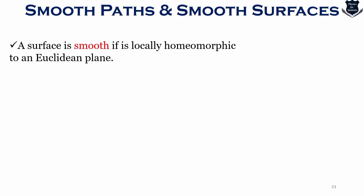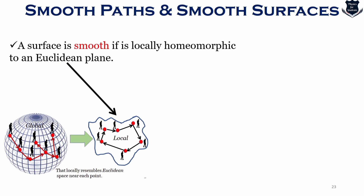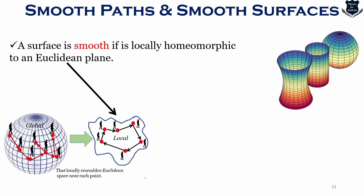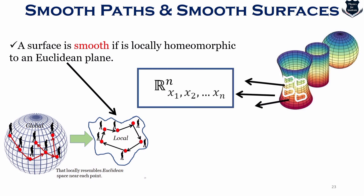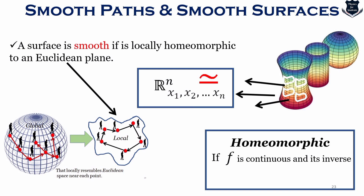A surface is smooth if it is locally homeomorphic to a Euclidean plane. Taking a shape and using differential calculus to differentiate it, we get R(n) as x¹, x², ..., xⁿ. A surface is smooth because it is locally homeomorphic — if S is continuous, its inverse is also continuous. A famous example is how a coffee cup turns into a donut and the donut turns back to the cup — these shapes are similar to Rⁿ in terms of their local coordinates x¹, x²,  ..., xⁿ.